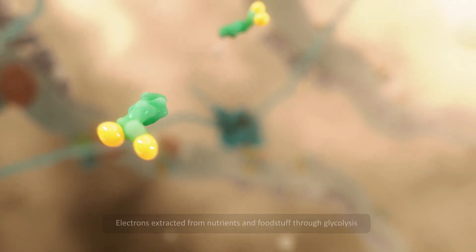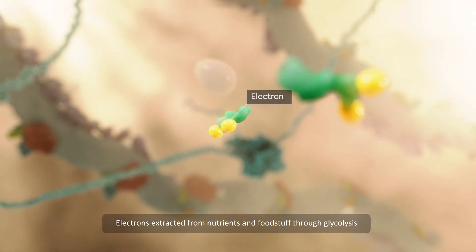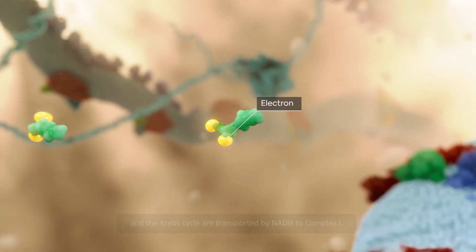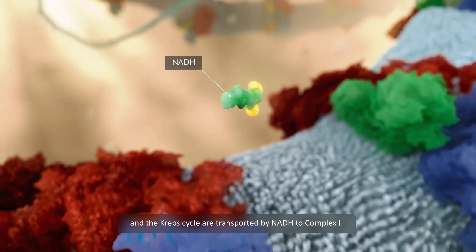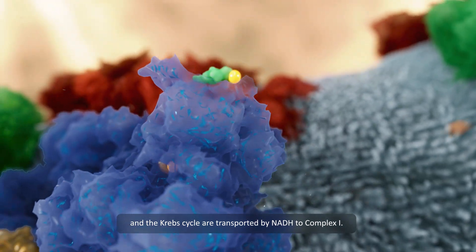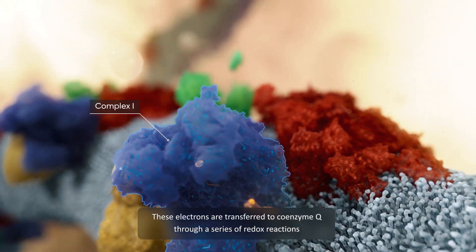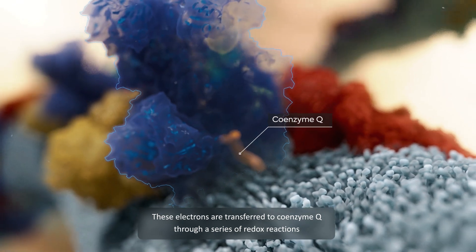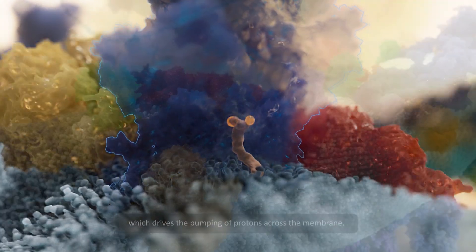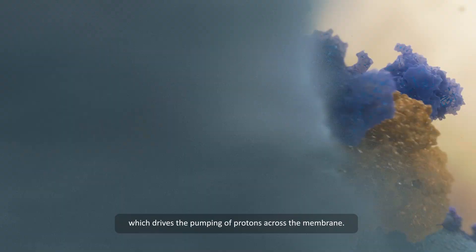Let's have a closer look. Electrons extracted from nutrients and foodstuff through glycolysis and the Krebs cycle are transported by NADH to complex 1. These electrons are transferred to coenzyme Q through a series of redox reactions, which drives the pumping of protons across the membrane.